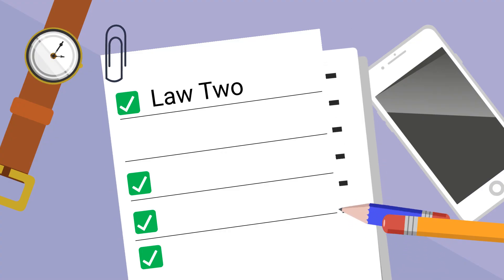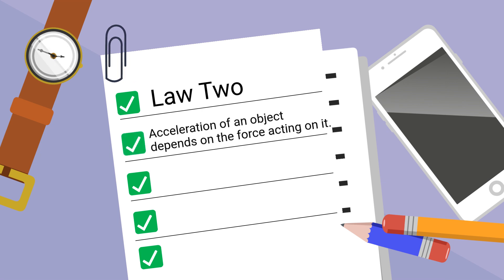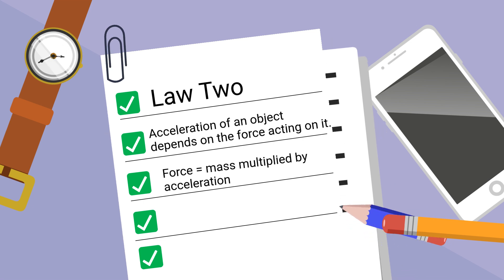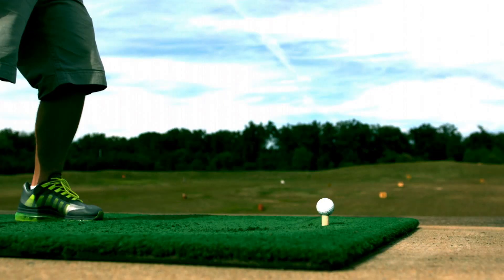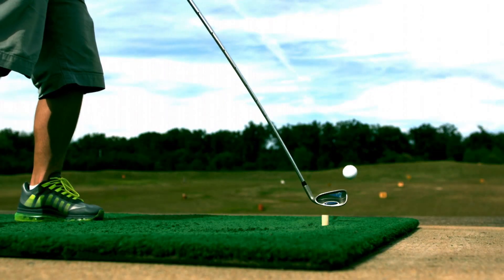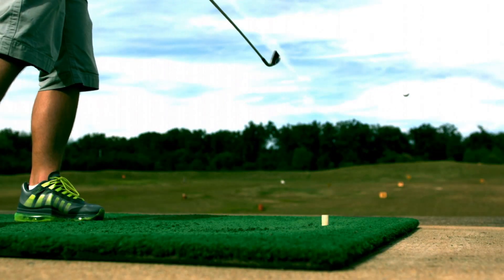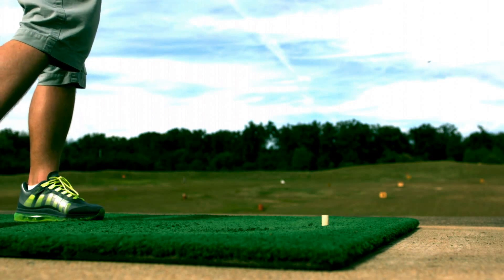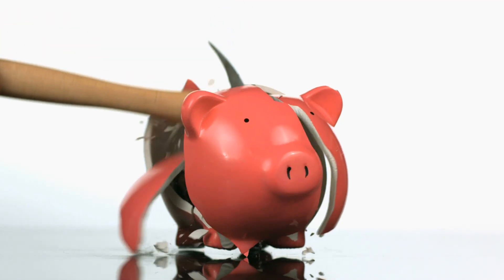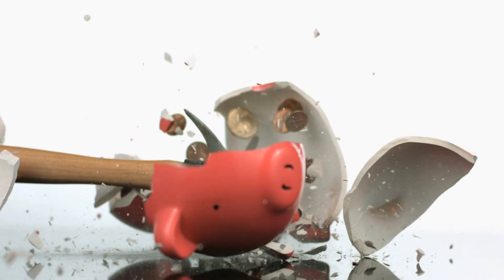Law two states that the acceleration of an object depends on the force acting on it and the mass of the object. There is also an equation: force equals mass multiplied by acceleration. Look at this golf swing — the golf club has a high rate of acceleration and strikes the golf ball with great force. This hammer has a greater mass and acceleration than the piggy bank, and look what happens.